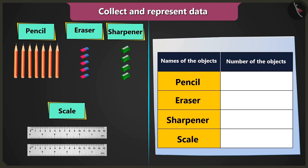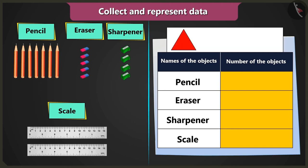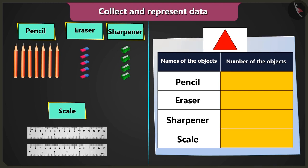And now in the column 'count of objects', you have to draw as many triangles, squares, or circles as the number of objects. So, we will draw triangles to fill the table.